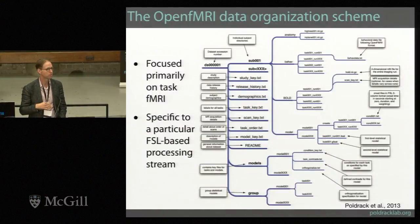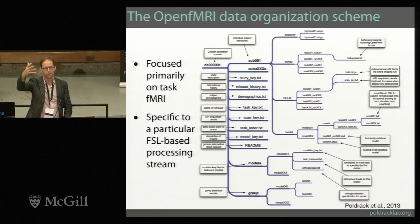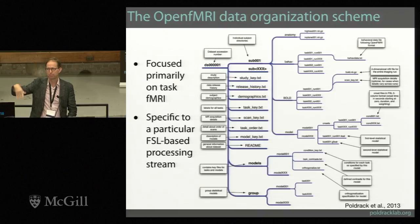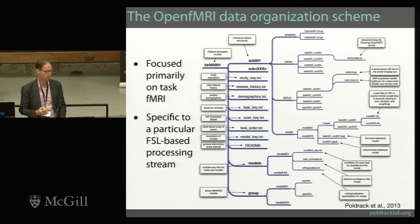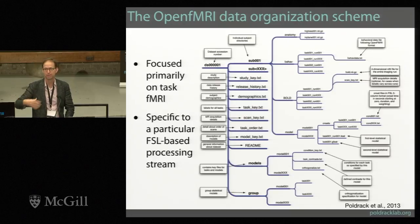Is it a T1-weighted or a T2-weighted image? We started addressing this in the OpenFMRI project a while ago and developed an ad hoc data organization scheme to share data, which basically said the data should be organized by folders per subject and then subfolders for each run, with particular types of metadata around tasks and subject information, all in either text files or NIFTI files. This was specific to a particular FSL-based data processing stream we had developed to do automated analysis within our group.